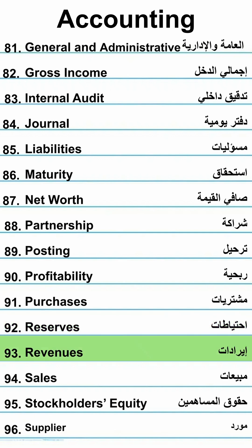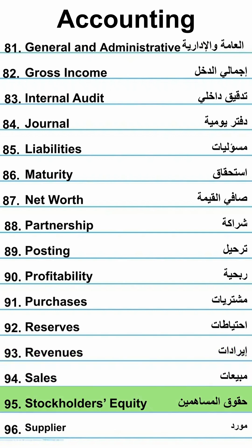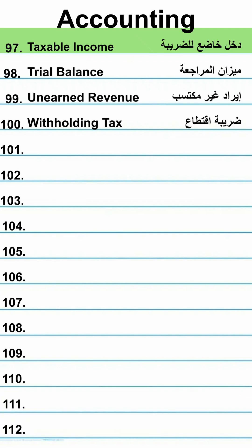Purchases. Reserves — Ahtyatat. Revenues — E-radat. Sales — Mabiat. Stockholders equity. Supplier — Muerud. Taxable income.